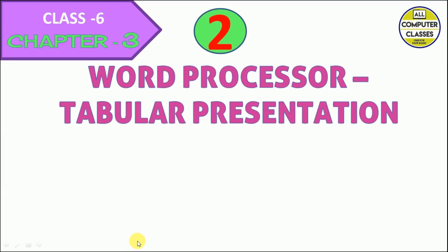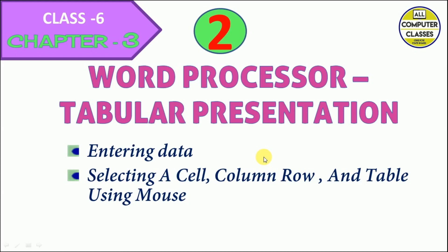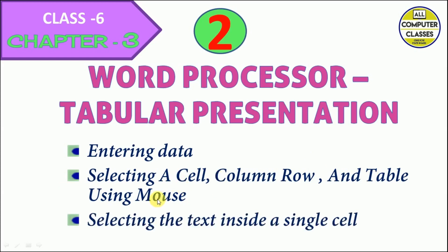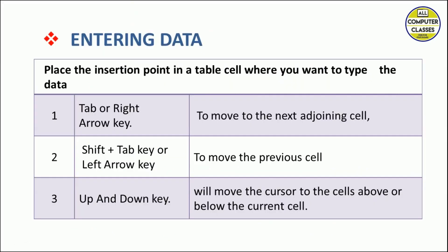Welcome back to computer classes. We have started Chapter 3 of Class 6, Part 2. The chapter name is Word Processor - Tabular Presentation, meaning we are studying about tables. Today's topics are entering data, selecting a cell, column, row, and table using mouse, and selecting the text inside a single cell.